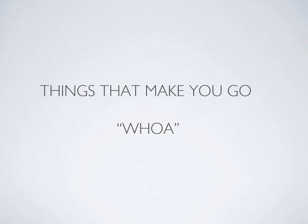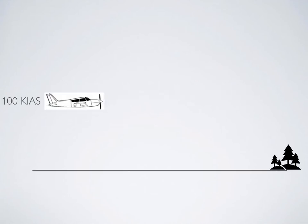Imagine we are flying at about 100 knots indicated. Flying closer to the ground changes a pilot's perspective due to the perception of moving faster along the earth below.